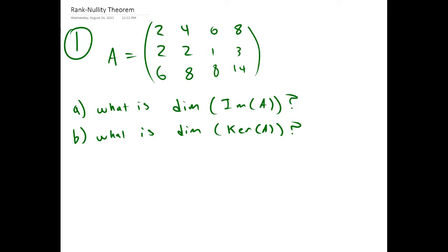Our first example has a matrix A and we're asked to find the dimension of the image of A and the dimension of the kernel. We could just find the image and kernel and then look at their dimension, but instead we're going to use some theorems.